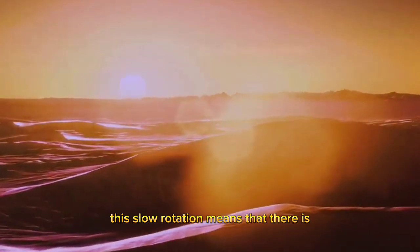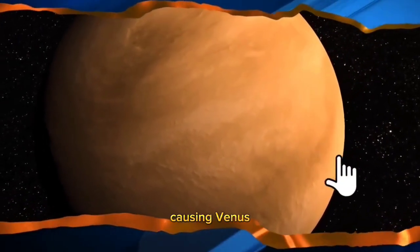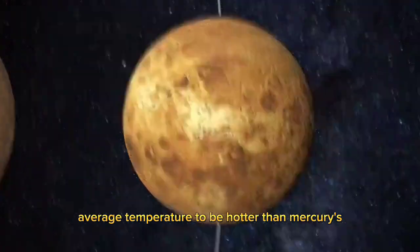This slow rotation means that there is very little cooling that occurs on the planet's surface, causing Venus's average temperature to be hotter than Mercury's.